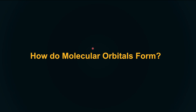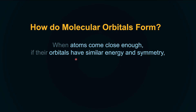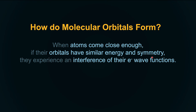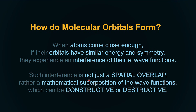How do molecular orbitals form? When atoms come close enough, if their orbitals have similar energy and symmetry, they experience an interference of their electronic wave functions. Such interference is not just a simple spatial overlap — it is a mathematical superposition of the wave functions. Mathematical waves can interfere constructively or destructively.